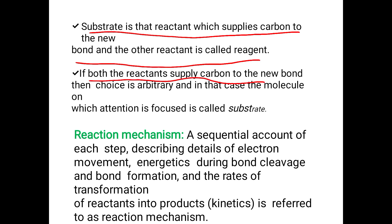If both reactants supply carbon to the new bond, the choice is arbitrary — the molecule receiving attention is called the substrate. Reaction mechanism is a sequential account of each step, describing details of electron movement, energetics, how each bond is cleaving (breaking), how a new bond is forming, the rate of reaction or transformation, and how the reactants convert to products — that is kinetics. Every reaction has its own mechanism.